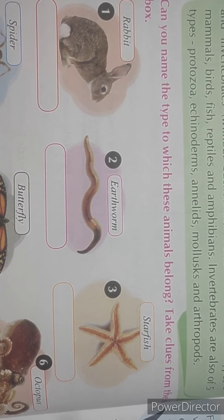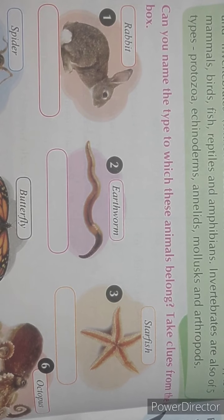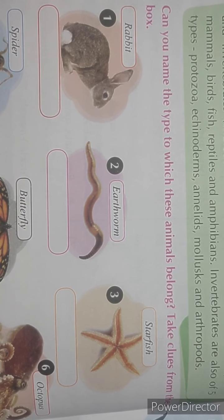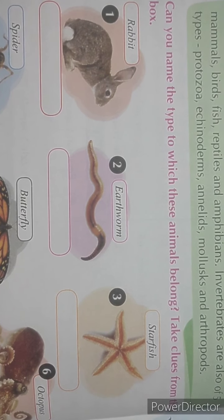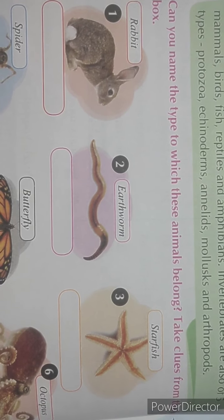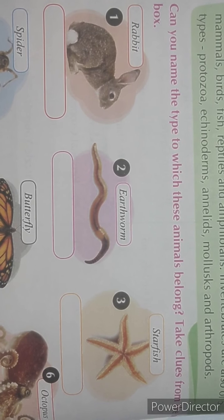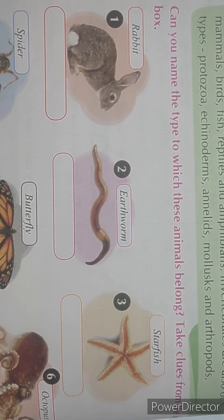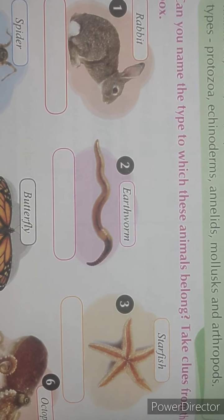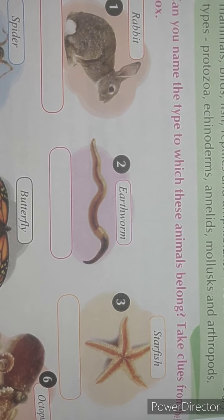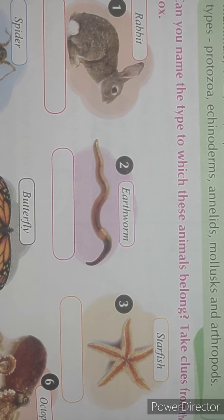Invertebrates are also of five types: protozoa, echinoderms, annelids, molluscs, and arthropods.